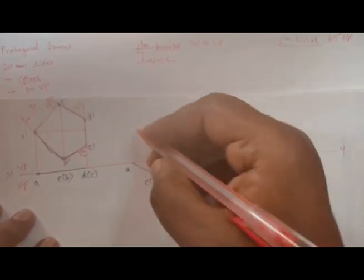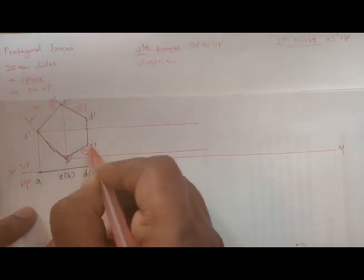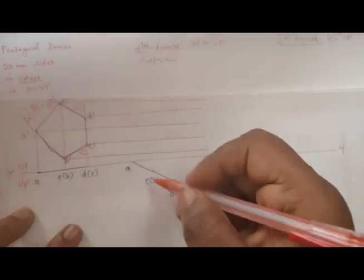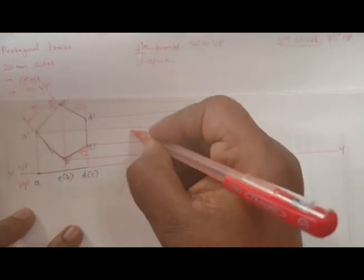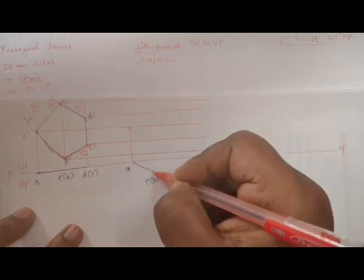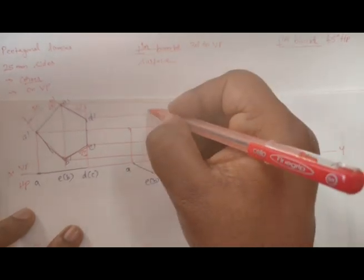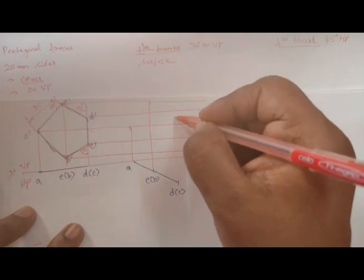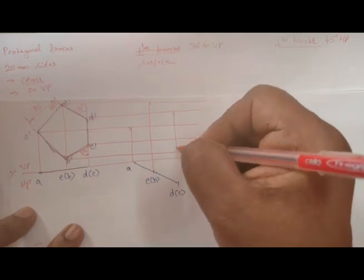Then I will take the distance from A to D and cut an arc. Project the lines annotation by annotation — this is B dash, this is C dash, D dash and E dash. Let's project and wherever it is going to meet: this is A, this point is E and B, and this point is C and D.